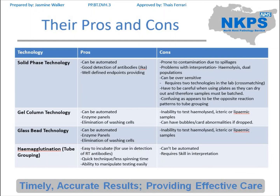Finally, haemagglutination or tube grouping: it's easy to incubate, it's quick, and it's easy to manipulate. However, it can only be done manually, it requires skill in the interpretation, and if you have a haemolysed sample it can be difficult to interpret. So you have to have someone who's confident in manual techniques to be able to do it quickly if needed.